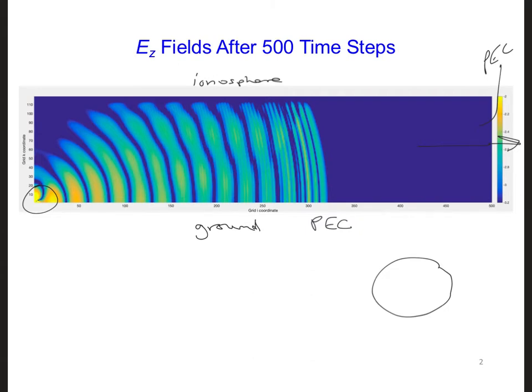To make the grid look infinitely long on the right side, we will need a perfectly matched layer that can absorb any waves propagating towards the right edge of the grid.